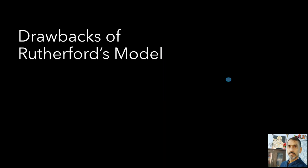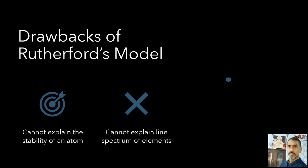The Rutherford's atomic model, in spite of strong experimental support, has few drawbacks as well. This model failed to explain the stability of atom, also it could not explain line spectrum of elements. Let us discuss these drawbacks in brief.